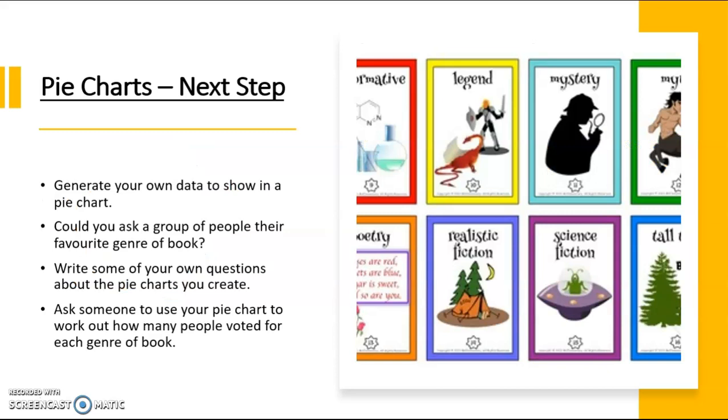Here's your next step for this lesson. It would be good if you could generate your own data in a pie chart. You could also ask people what their favourite genre of book is. What you should do once you've created your pie chart is not include all of the information and then write some questions of your own. Ask someone to use your pie chart to work out how many people voted for each genre of book. Hopefully you've enjoyed this lesson. If you have any questions, please let me know. Bye for now.